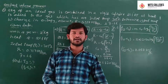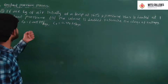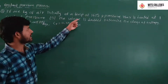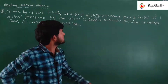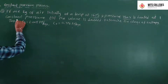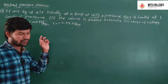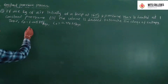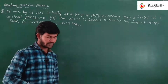Next we look at the constant pressure process problem. If 1 kg of air is initially at a temperature of 165 degrees centigrade and pressure 7 bar, it is heated at constant pressure till the volume is doubled. Determine the change of entropy. Take CP = 1.005 kJ/kg·K and CV = 0.718 kJ/kg·K.